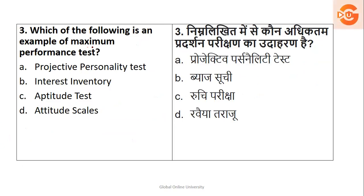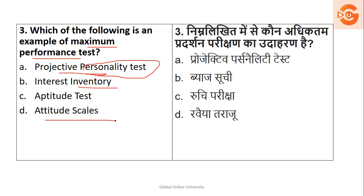Next question: which of the following is an example of a maximum performance test? Even if you don't know what a maximum performance test is, think about it — maximum means large in number or more; performance means action. The options are: projective personality test, interest inventory, aptitude test, and attitude scales. Personality test reflects only the personality aspect; interest inventory doesn't match; attitude scales only consider attitude. The option closest to the question is aptitude test.